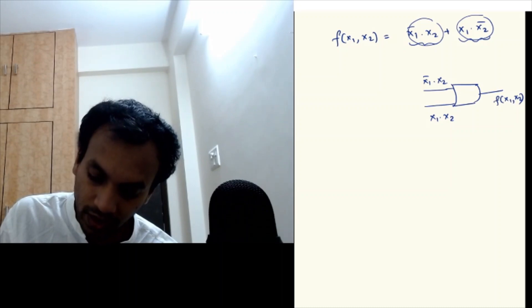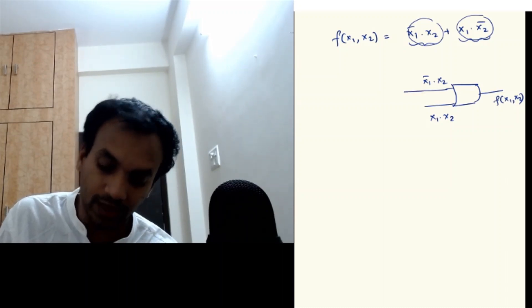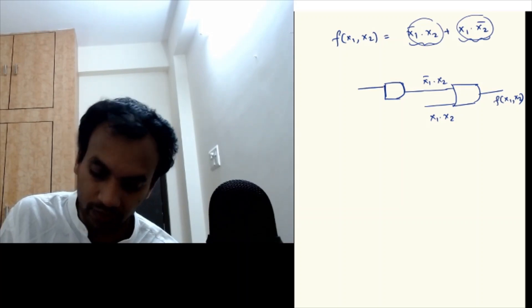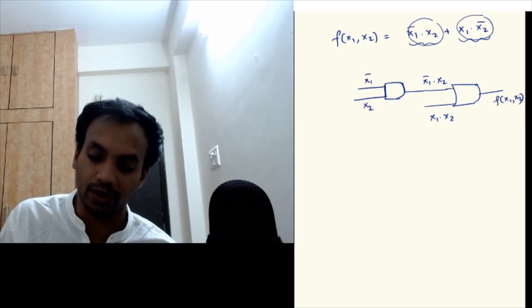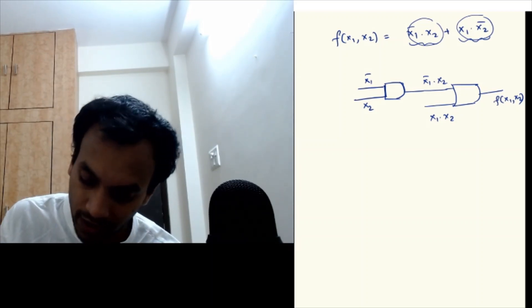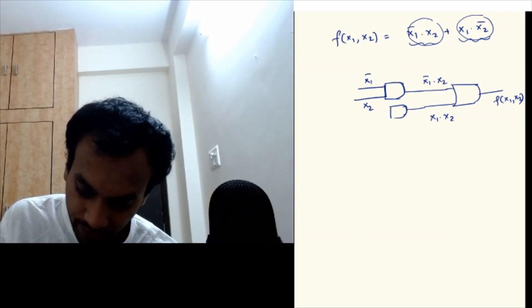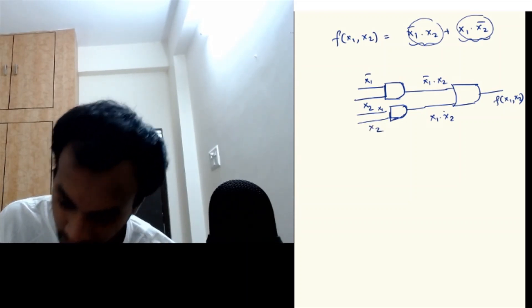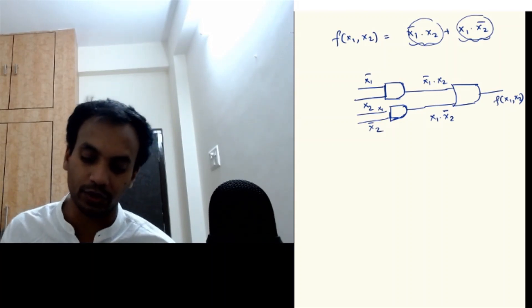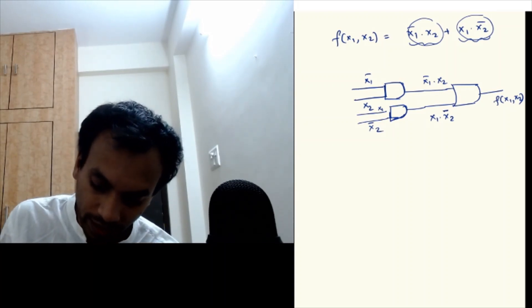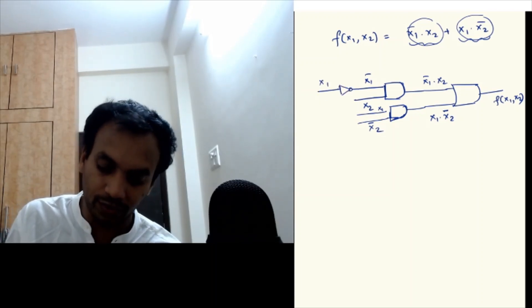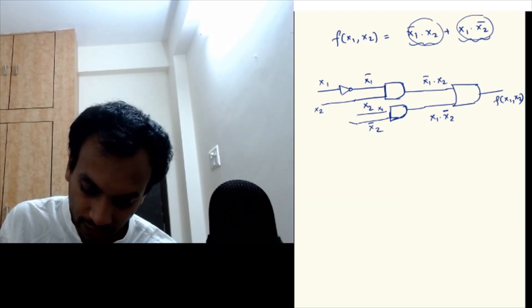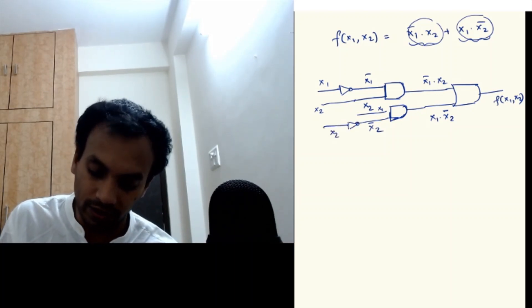For x1 bar times x2, I have an AND gate into which x1 bar and x2 are inputs, giving x1 bar times x2 as output. For x1 times x2 bar, I need x1 and x2 bar as inputs to another AND gate, giving x1 times x2 bar. For x1 bar, I need an inverter converting x1 to x1 bar. Similarly, for x2 bar, I need an inverter converting x2 to x2 bar.